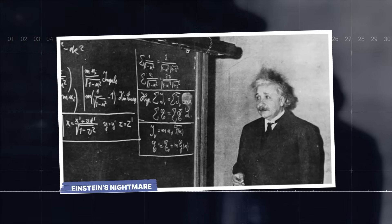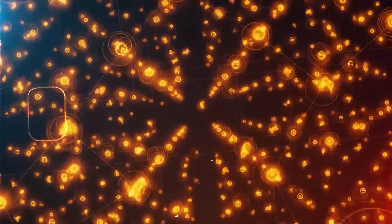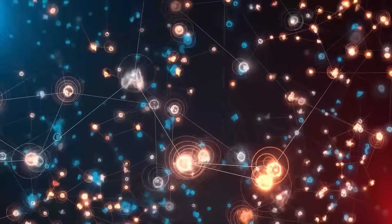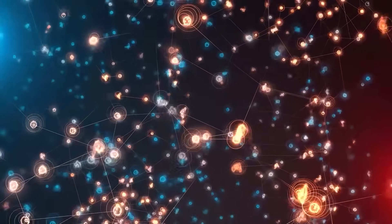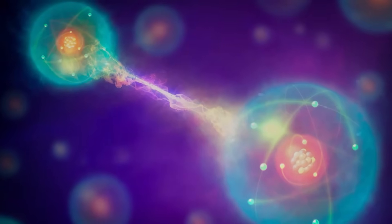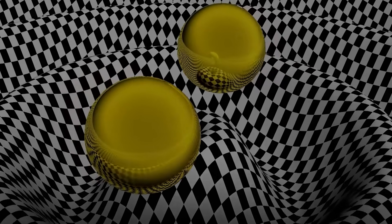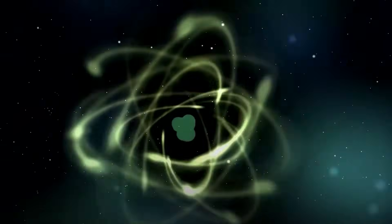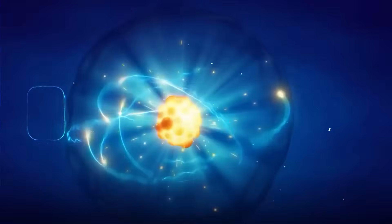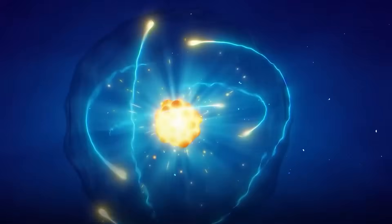Einstein's Nightmare. You see, for the longest time, quantum entanglement was more of a mathematical ghost than something you could actually take a picture of. Einstein famously called it spooky action at a distance, and for a good reason. It's the idea that two particles can be linked in such a way that they instantly affect each other, no matter how far apart they are. We're talking about a connection that's faster than the speed of light, something that, according to our current understanding of physics, should be impossible.